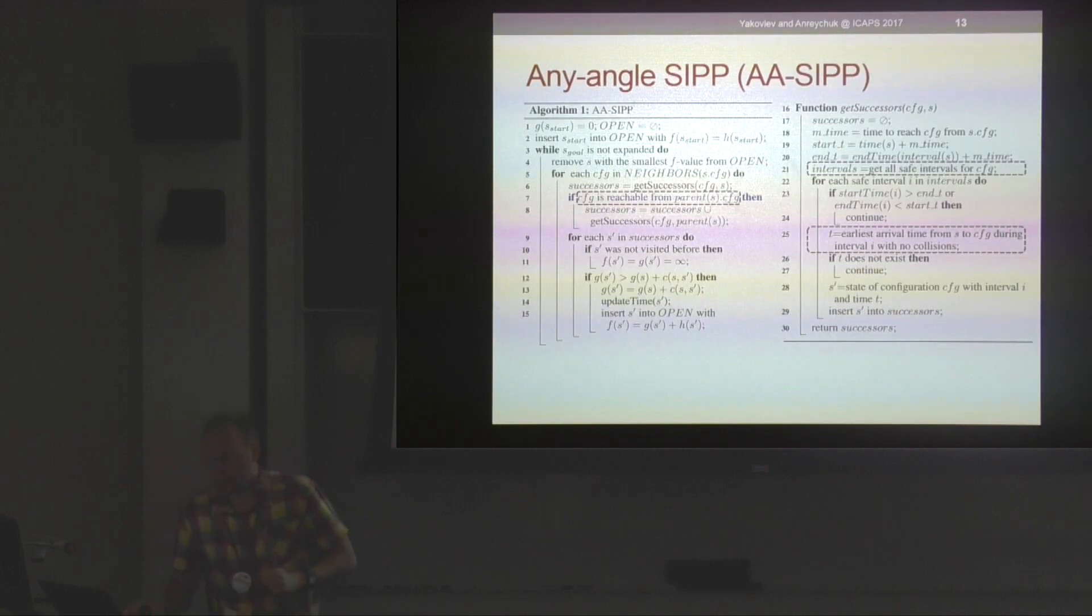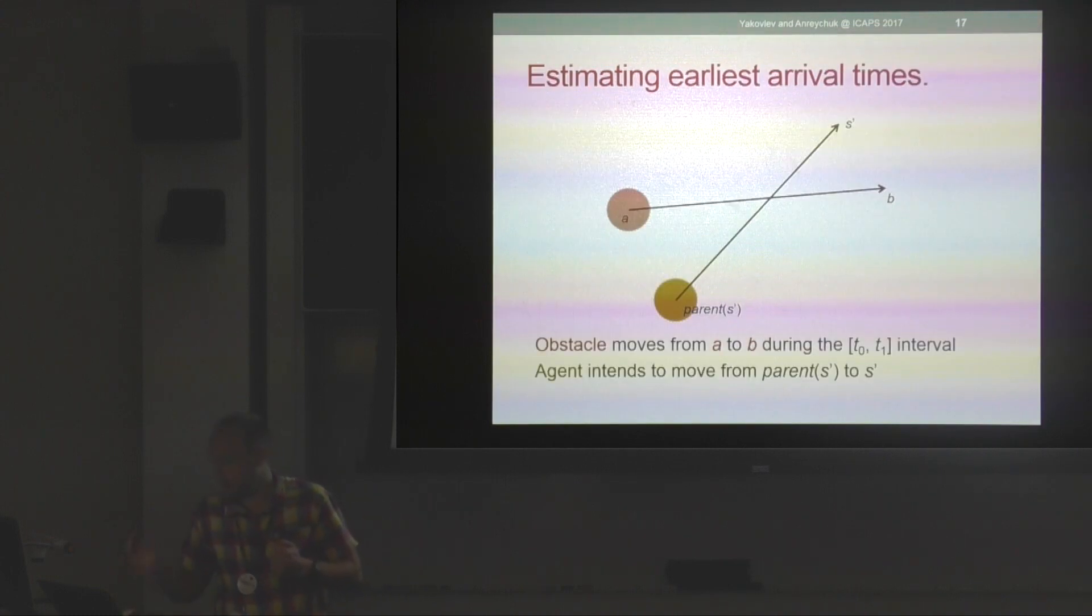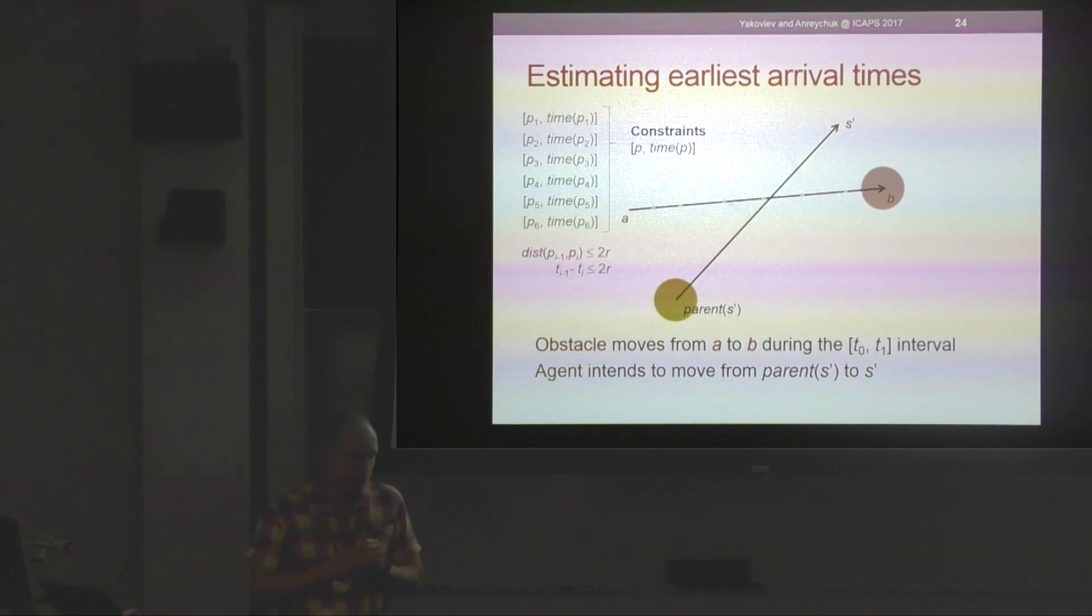Okay, we know how to validate shortcuts, we know how to calculate safe intervals. We need to know how to estimate earliest arrival time, and we do this by basically approximating collision intervals induced by moving obstacles that interfere with the any-angle move we are looking at. I'll sketch the main idea briefly. Suppose there is an agent which wants to go to s-prime moving from parent s-prime, and there is an obstacle on its way.